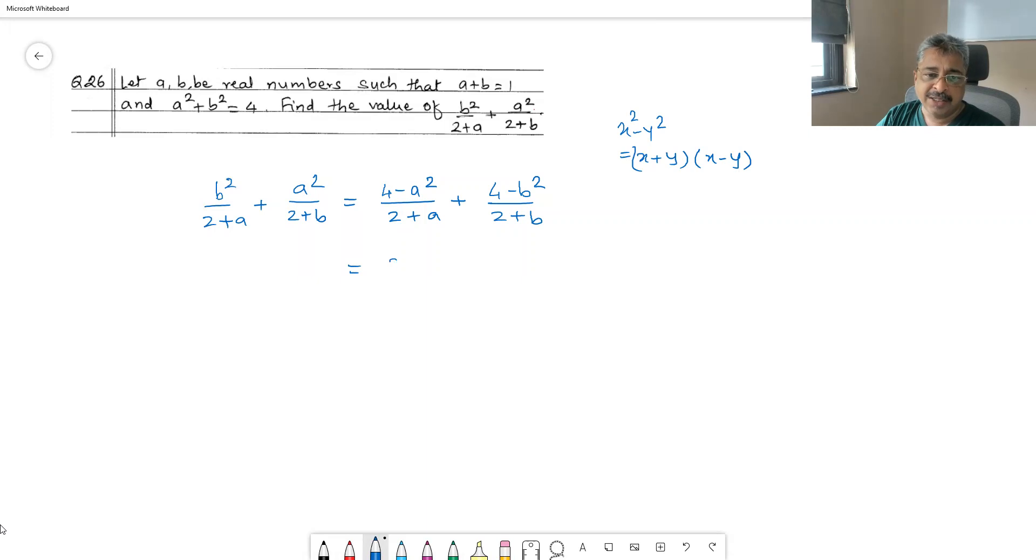So the numerator can be written as 2 plus a times 2 minus a divided by 2 plus a, plus 2 plus b times 2 minus b divided by 2 plus b. Now, you will observe that this 2 plus a cancels, and that is how the problem is designed.